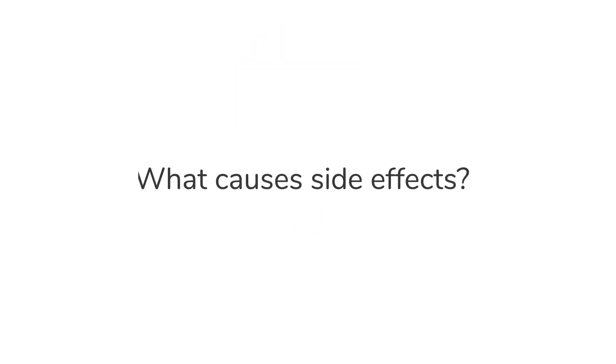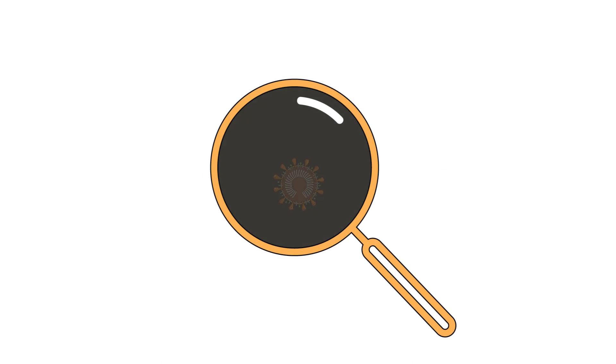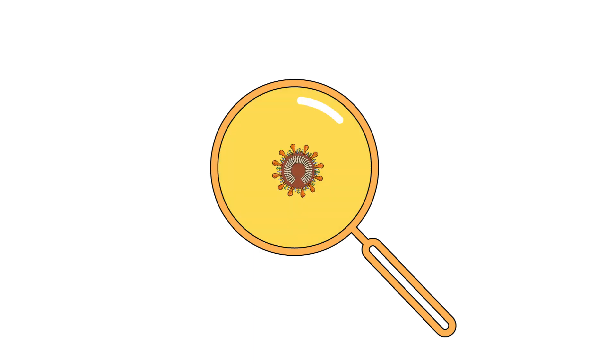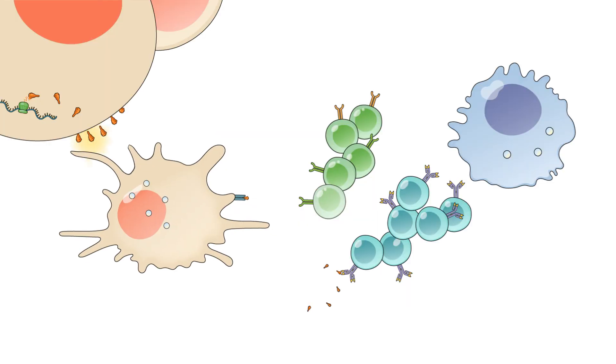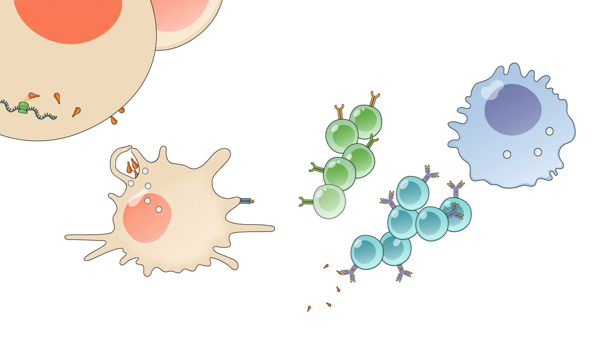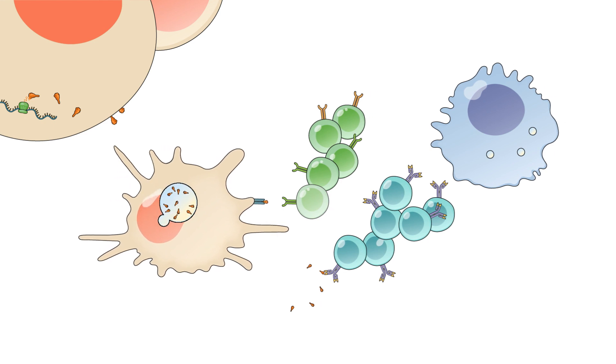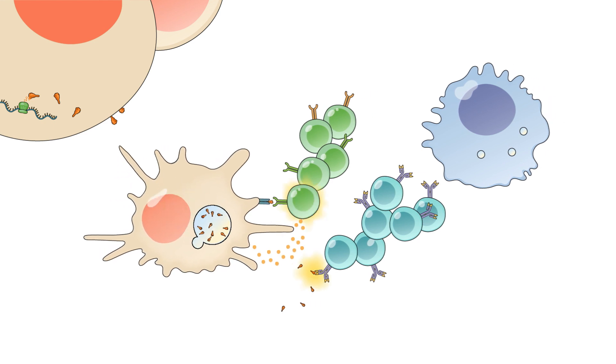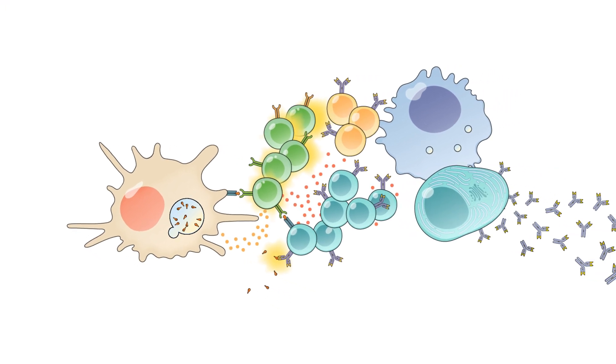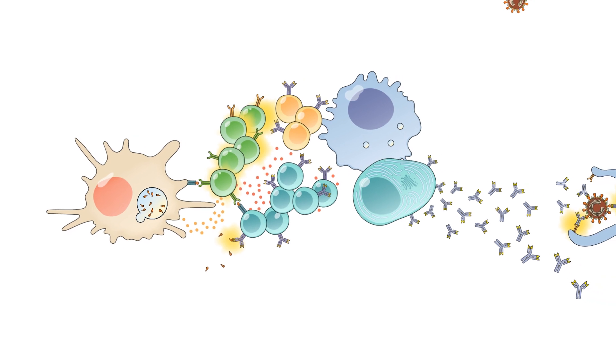What causes side effects? As you may remember, the main job of a vaccine is to prepare the body's immune system to identify and destroy invading germs that can cause disease. In order to do this, the vaccine works by imitating the germ in order to safely train the cells in your immune system to recognize and fight the germ if it enters your body in the future.